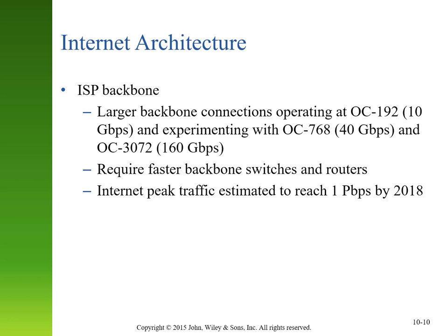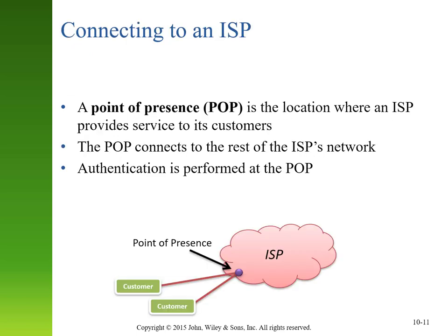When a business or individual is trying to connect to an Internet service provider, they're doing so through a point of presence, abbreviated POP. This is accomplished through specific hardware that translates your local network traffic to the appropriate protocol for your Internet service provider. The POP location is also where authentication takes place, so that you have to prove that you are a customer for that Internet service provider and are allowed to use their services.